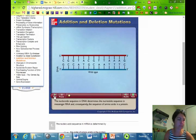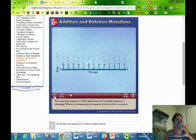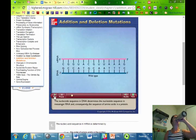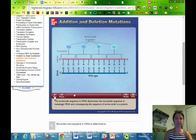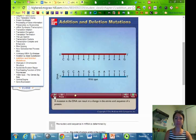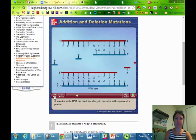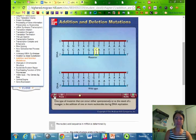The nucleotide sequence in DNA determines the nucleotide sequence in messenger RNA, and consequently, the sequence of amino acids in a protein. A mutation in the DNA can result in a change in the amino acid sequence of a protein. One type of mutation that can occur, either spontaneously or as the result of a mutagen, is the addition of one or more nucleotides during DNA replication.